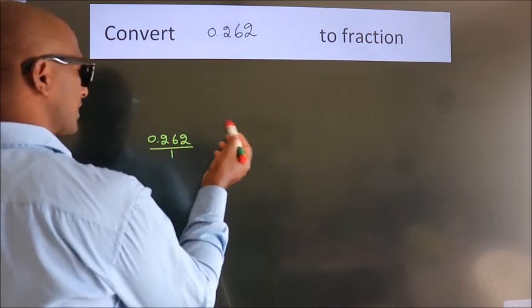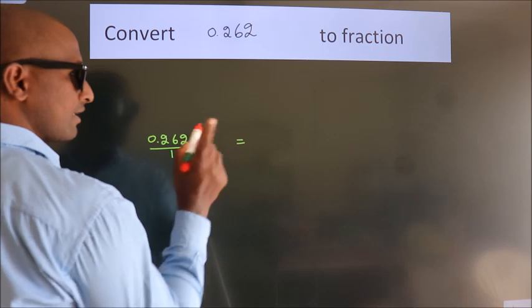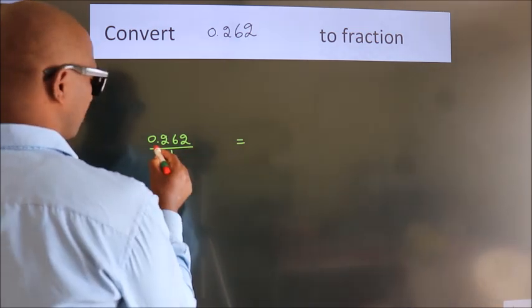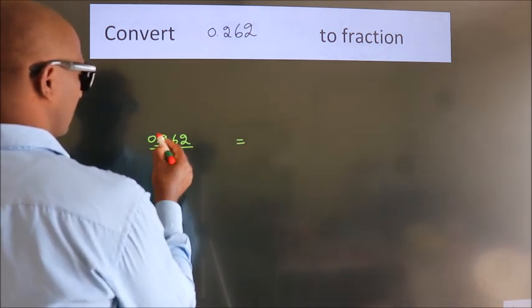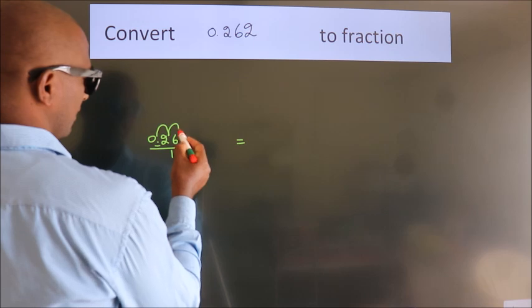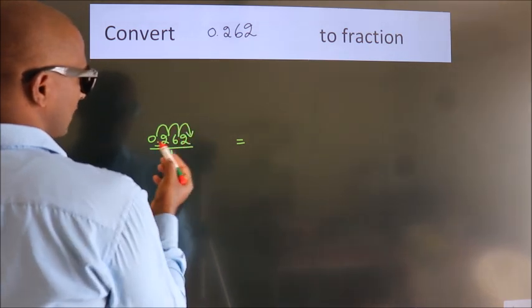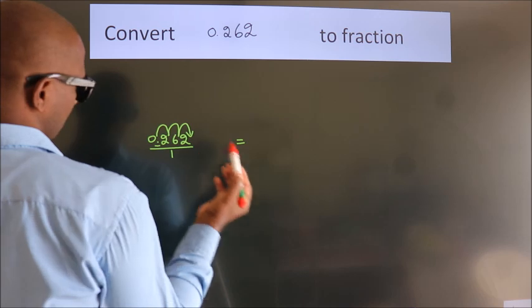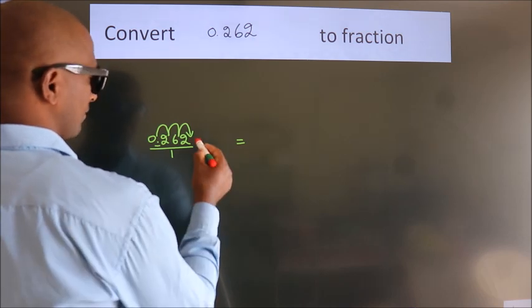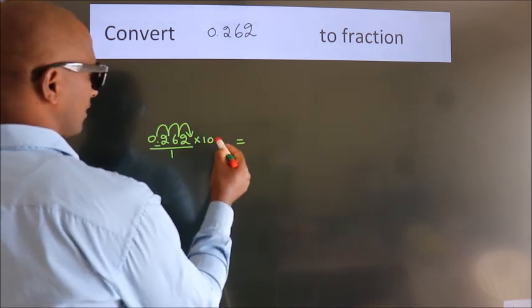To convert this to fraction, we have to move this decimal after 1, 2, 3 numbers. To move this decimal after 3 numbers, we have to multiply it with 1000.